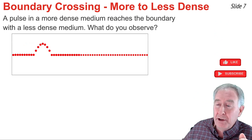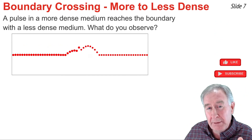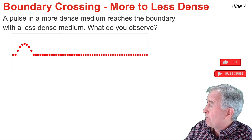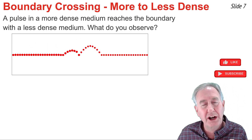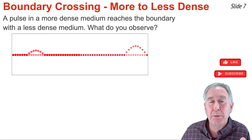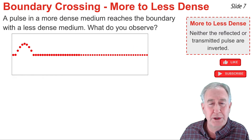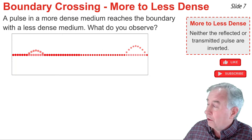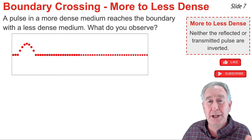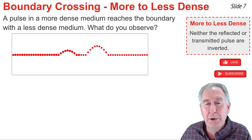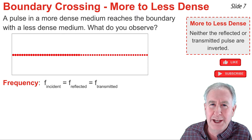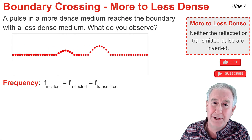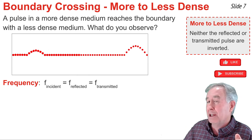This looping animation depicts a pulse moving through a more dense medium and approaching the boundary with a less dense medium. There's a lot to observe here. First, there is no inversion whatsoever — neither the reflected pulse nor the transmitted pulse are inverted; in all situations, particles are displaced upwards. Second, the frequency of the incident pulse equals the frequency of the reflected pulse, which equals the frequency of the transmitted pulse.